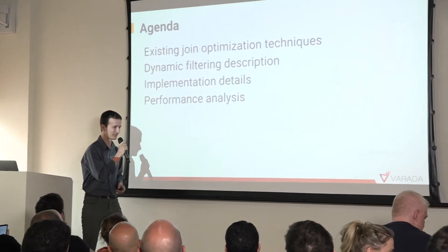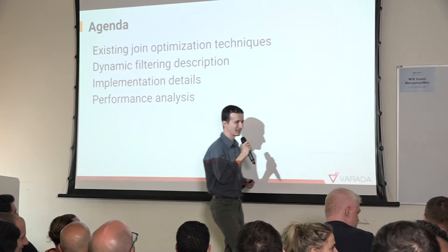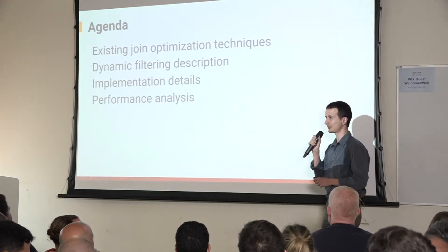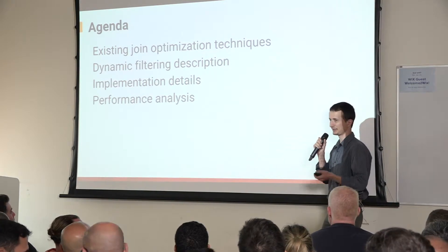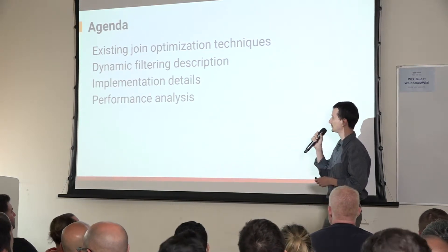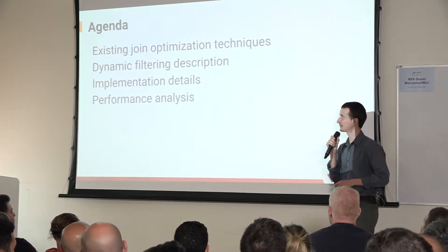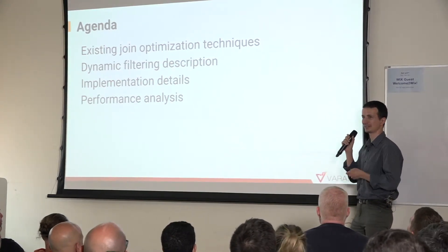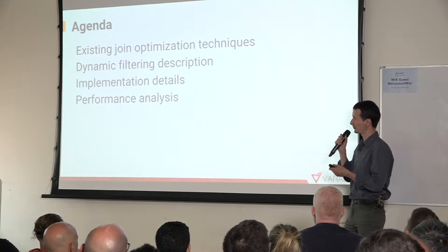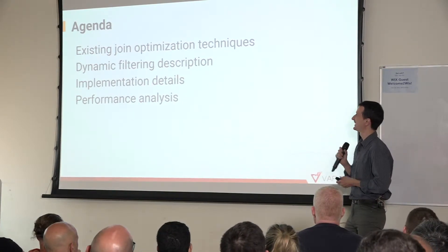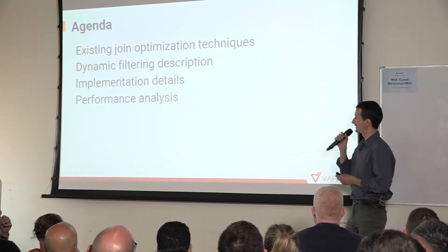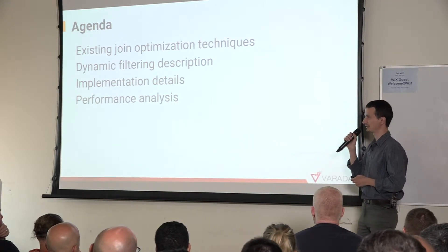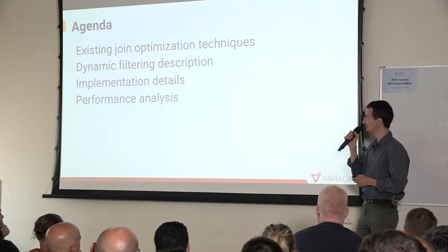I will start with describing existing join optimization in Presto, which can be useful even if you're not using dynamic filtering. Then we'll describe the problem we were trying to solve with dynamic filtering, discuss existing implementations and our proposal, and finally describe the performance gains that can be reached using this technique.